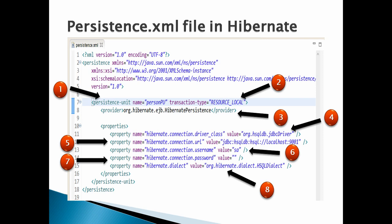Number one: the persistence-unit tag describes the configuration for the entity managers created by the entity manager factory. This tag has attributes 'name' and 'transaction-type'. The name takes in a name of the persistence unit — here the persistence unit name is 'PersonPU'. This name has to be unique across the application and is used by the entity manager factory to create instances of the entity manager.